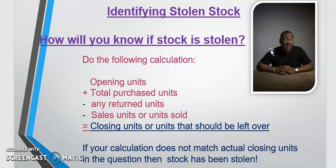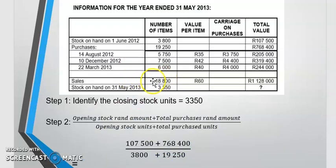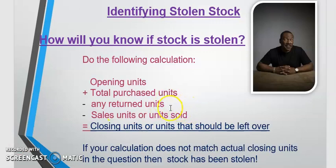How will you know if stock is stolen? Take your opening units plus what you purchased — what should have been in the business — minus anything returned, and minus the units you sold. That tells you what units should have been left over. Then compare that calculation to what you actually counted. For example, if your calculation gives 3,200 but the closing stock says 3,350, then you know stock has been stolen — the numbers must match. If they don't match, stock has been stolen.